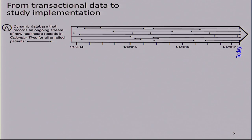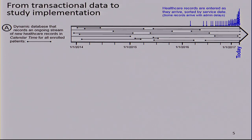This is how we do this. You have these transactional databases — dynamic databases where information is entered as time goes on. Each little blue arrow is new information dropping into the database. These spaghetti lines in the middle represent individuals as they enroll in a plan and disenroll, and we observe them for that period of time.